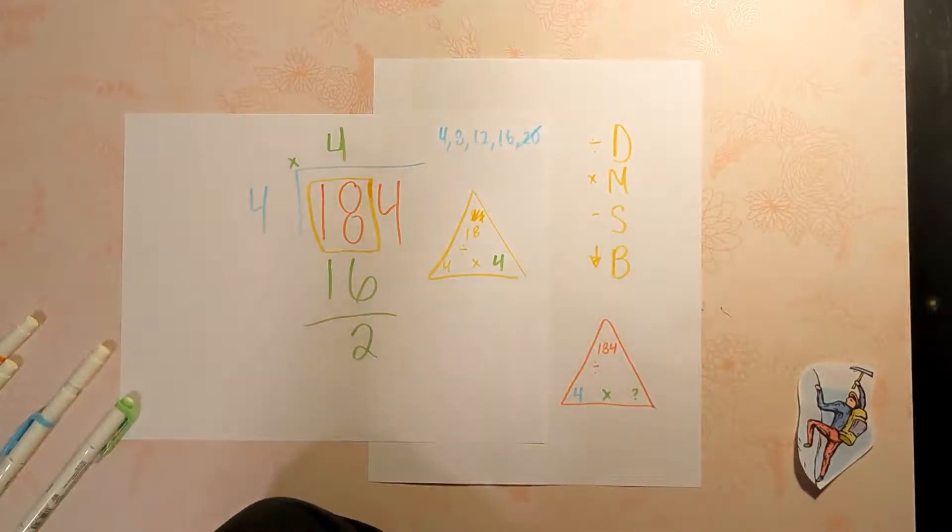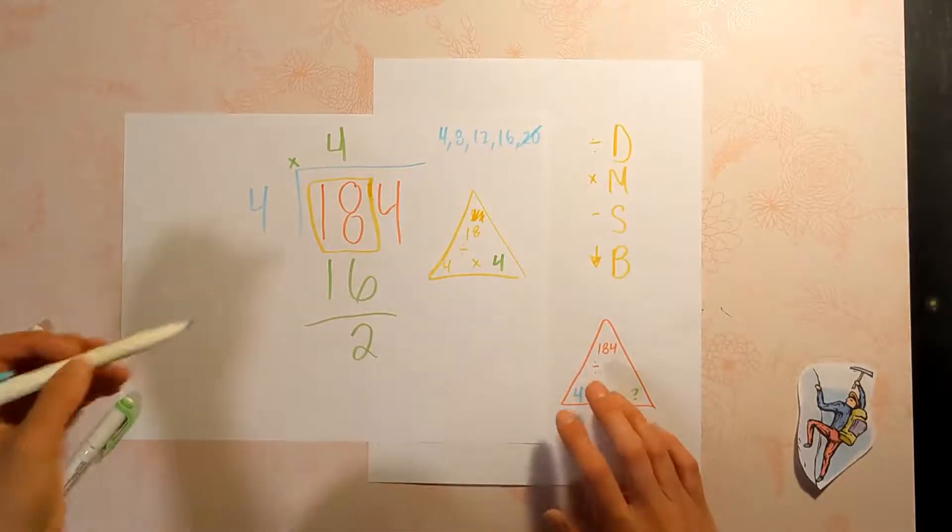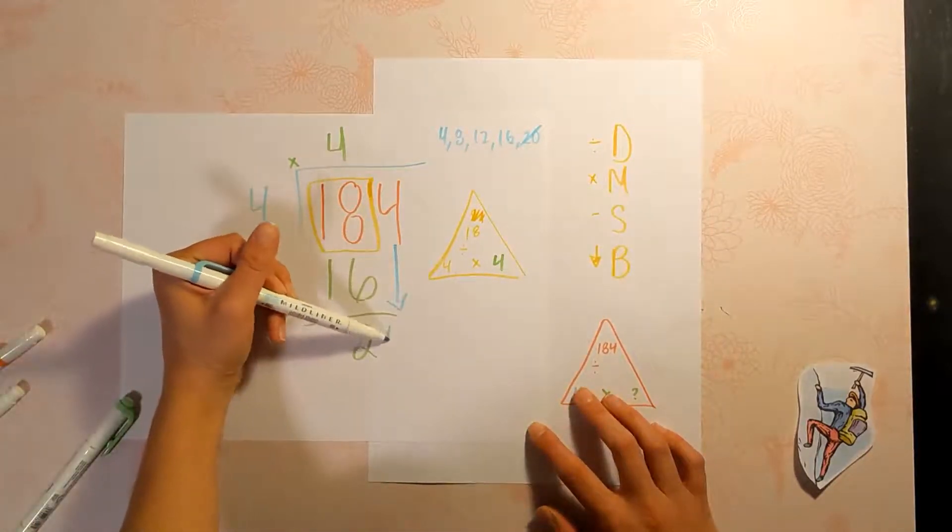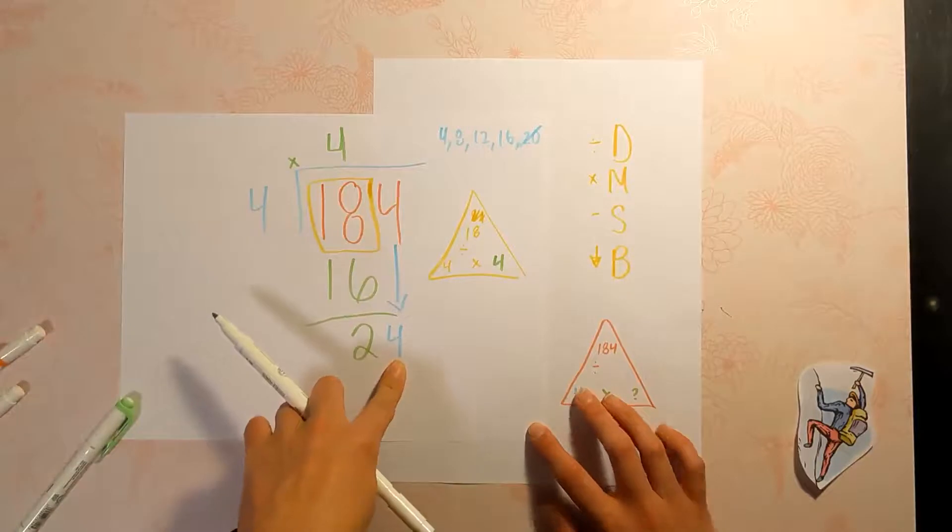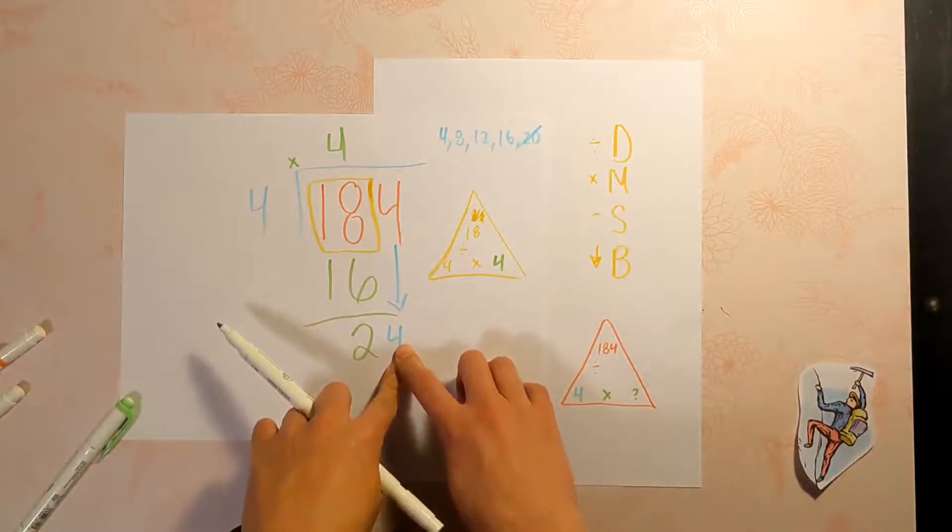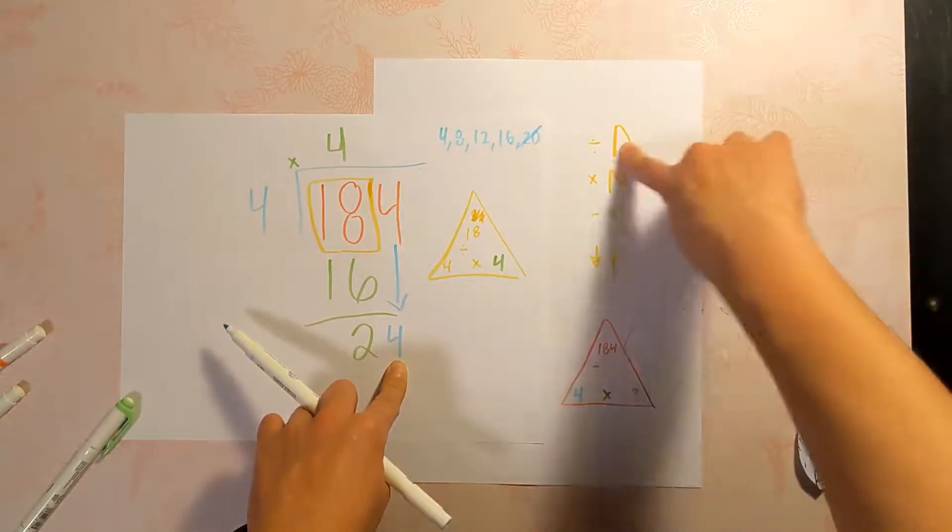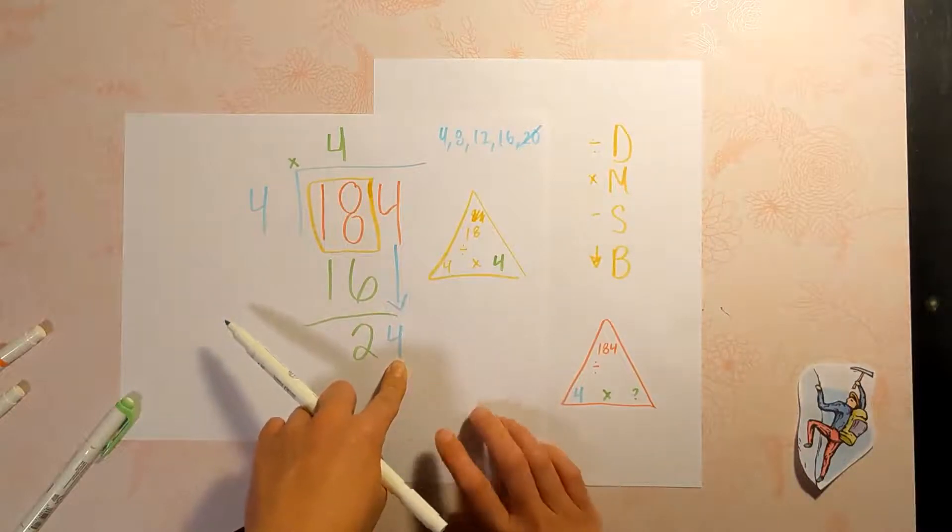Next step is bring down. So tell me, what are you going to bring down? Look at this. What are you bringing down? We're going to bring down the four. And now we're going to do 24 divided by four.